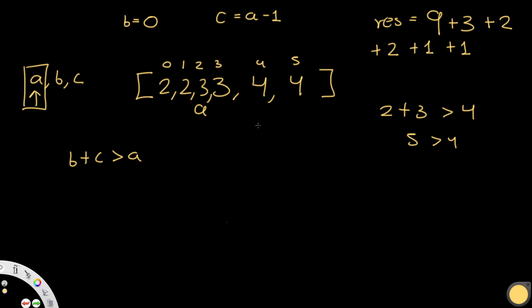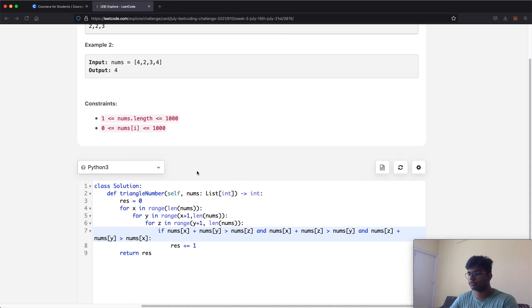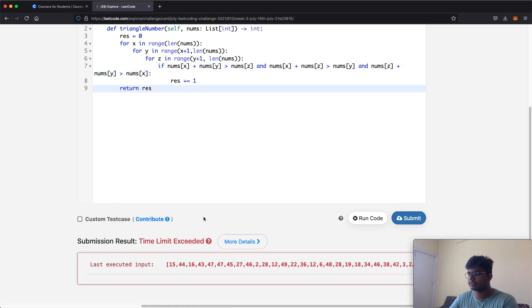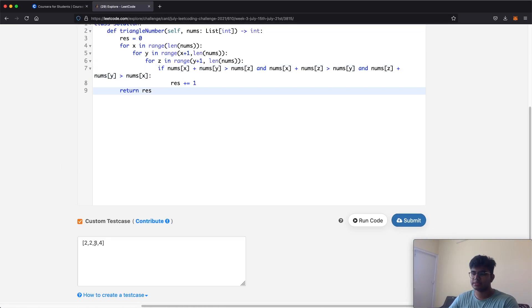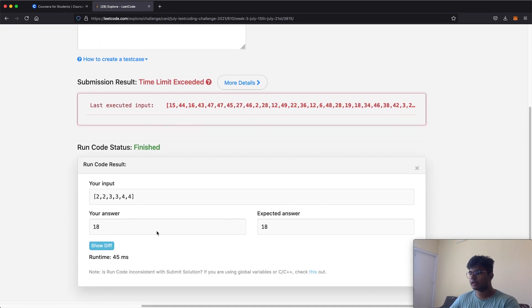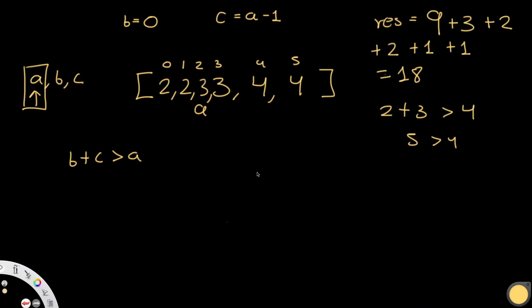So our final result: 9 + 3 + 2 + 3 + 1 = 18. Let's verify with a custom test case using nums [2, 2, 3, 3, 4, 4]. Running the code gives us 18, which matches our expected answer. This confirms our solution is correct.